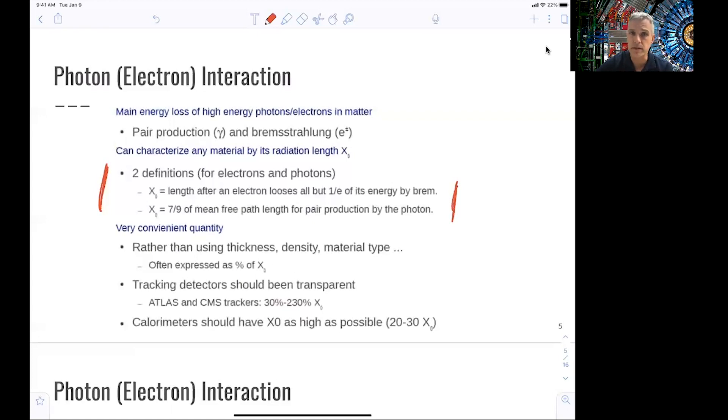It's a very convenient property or quantity because you don't have to worry about when you're thinking about the interaction of the detector, about the specific thickness and what it means in terms of energy loss. Simply know that your piece of lead is a fraction of a radiation length, and that tells you how many of your photons actually, how much of the photon energy is being lost.